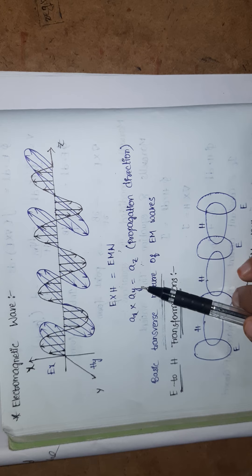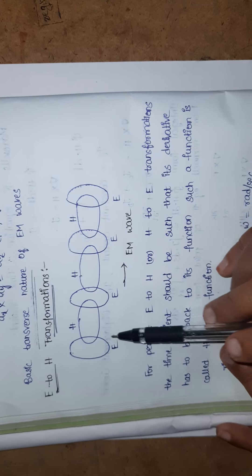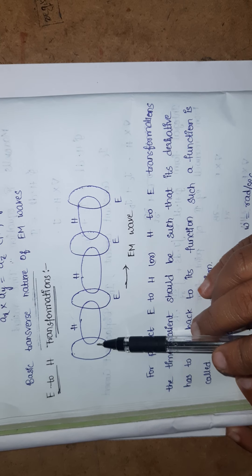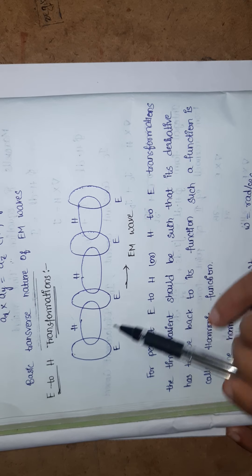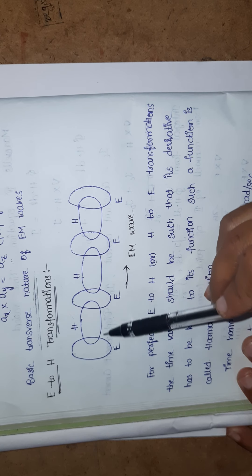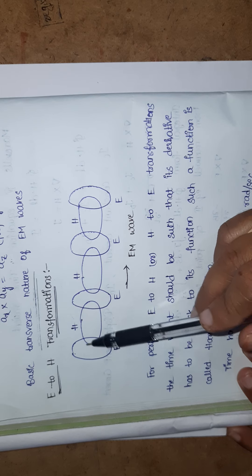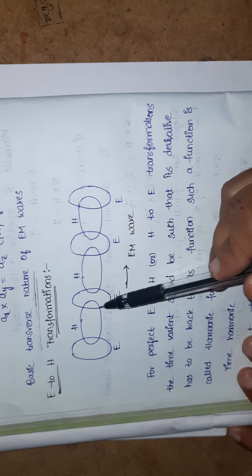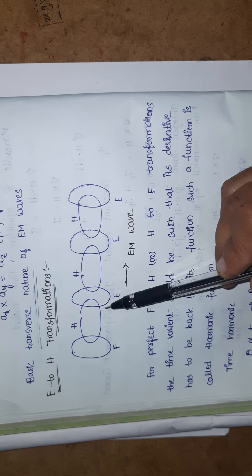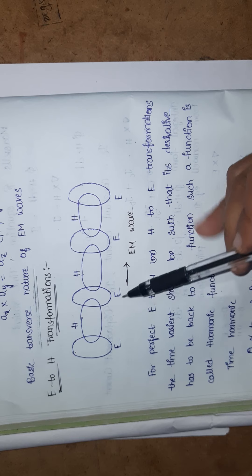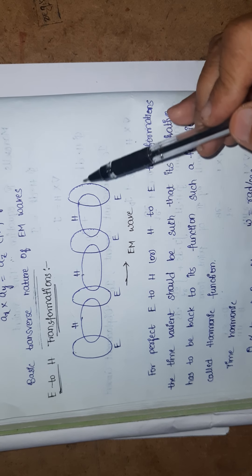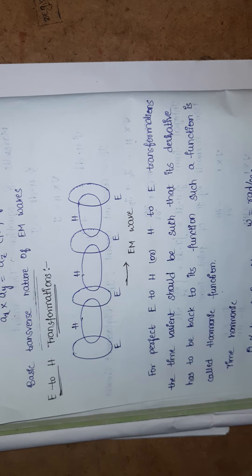How E to H transformations are done: the electric field in the x direction generates the magnetic field in the y direction, and the electromagnetic wave moves along z. The electric field generates the magnetic field at 90 degrees, and again the magnetic field generates the electric field in the perpendicular direction. Electric and magnetic fields are always 90 degrees apart — this is how E to H transformations occur and the electromagnetic wave moves.